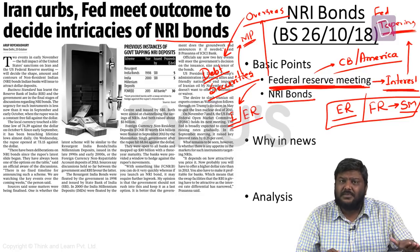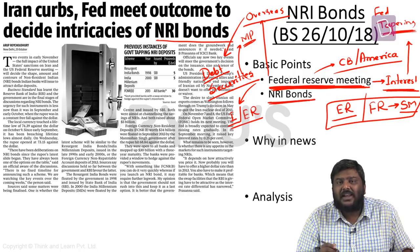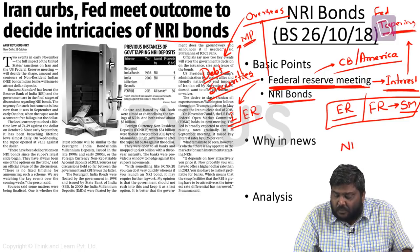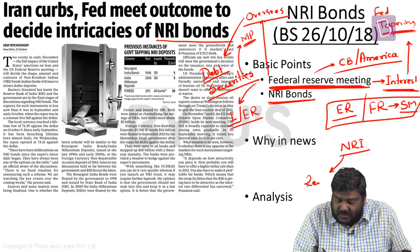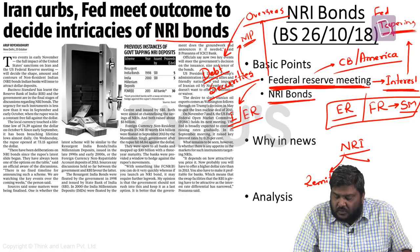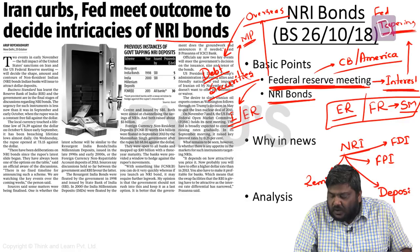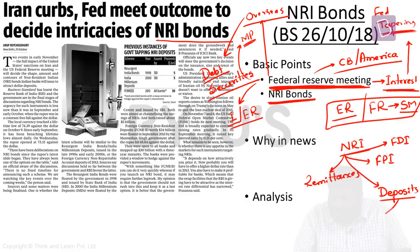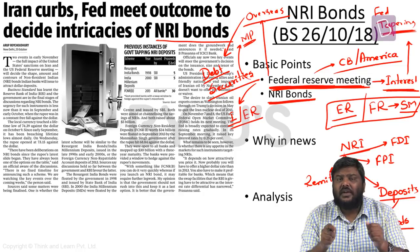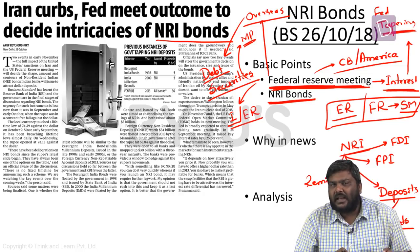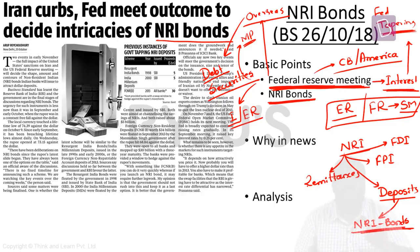Another important concept in the newspapers recently is NRI bonds. NRIs play a very important role in the Indian market. They contribute to the Indian economy in the form of remittances, FPI investment, FDI investment, and NRI deposits. The concept of NRI bonds is part of NRI deposits. In the last couple of months, the Indian rupee has depreciated by more than 13%. One way of controlling this depreciation - by bringing in dollars into the Indian market - can be done by issuing NRI bonds.